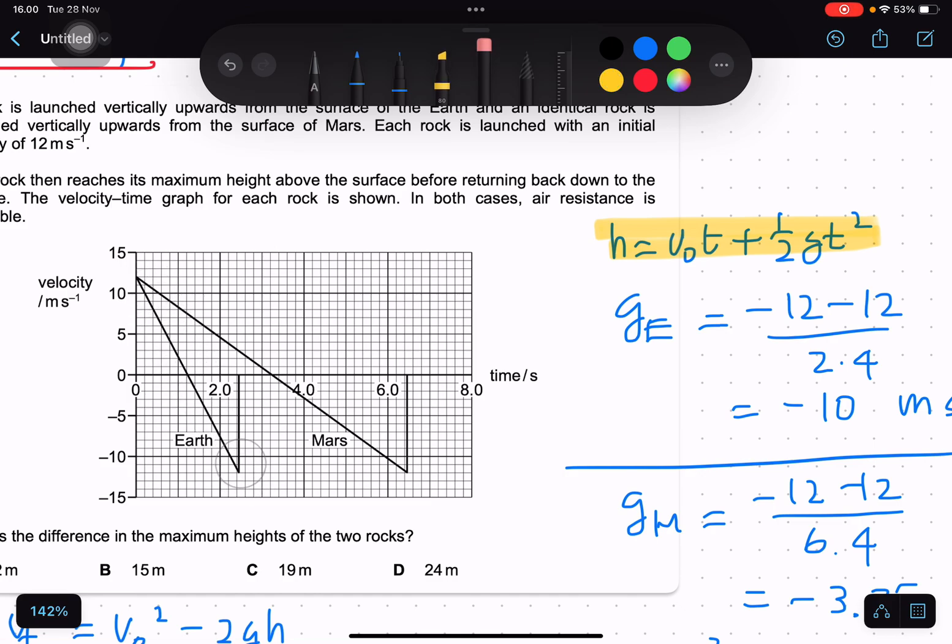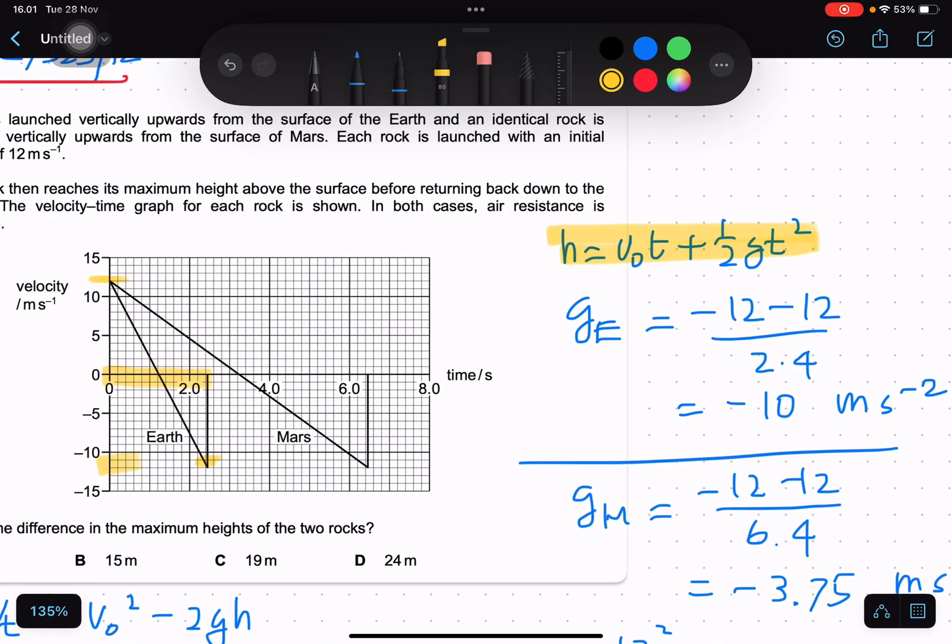g on the Earth equals 12 minus negative 12 divided by 2.4. 2.4 is the time until they reach this position, so we get g on the Earth is 10 meters per second squared.